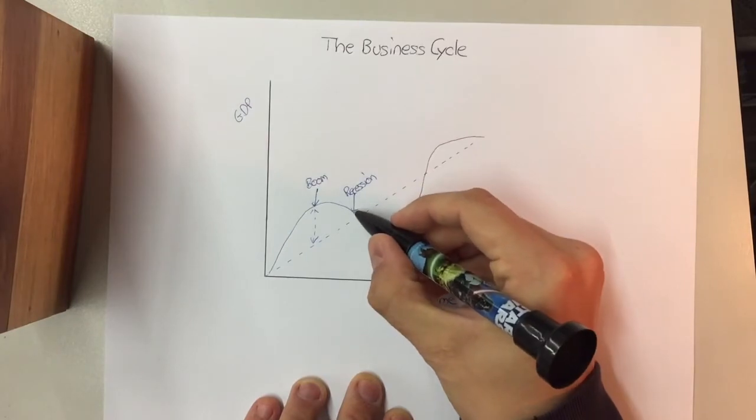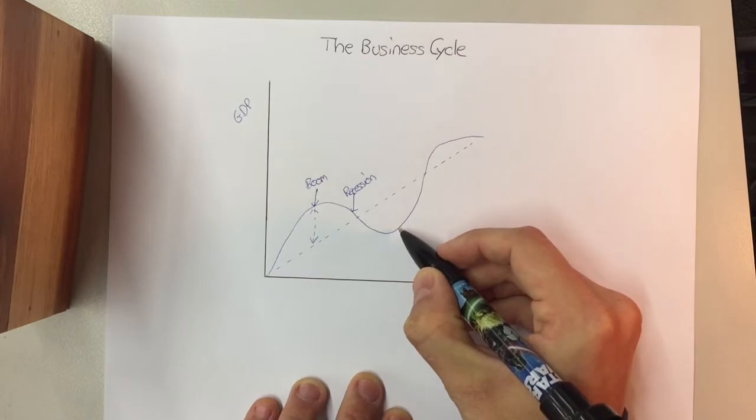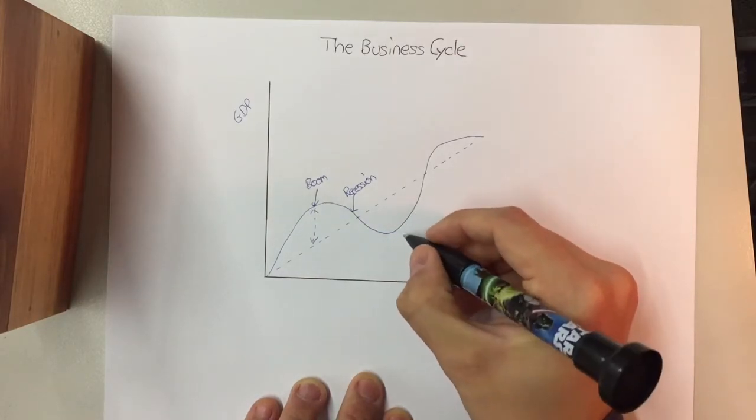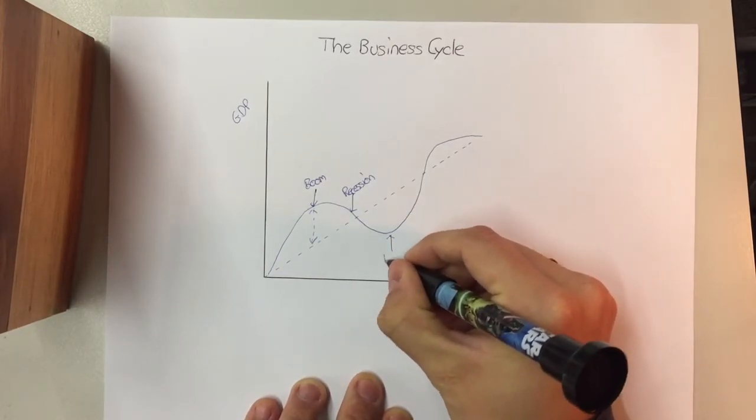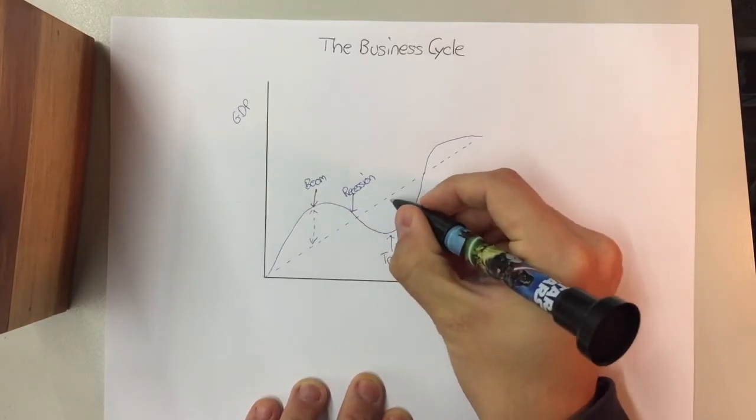Then that slowly continues to decline, people are spending less, people get laid off jobs, less investment. And eventually we end up in a trough where we are now operating below what we could be, what our potential is.